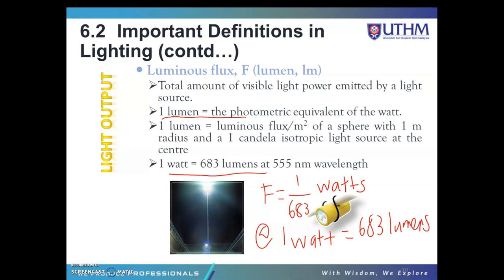One lumen is equivalent to the luminous flux per meter squared of a sphere with 1-meter radius and a 1-candela isotropic light source at the center. One watt is equivalent to 683 lumens at a wavelength of 555 nanometers.